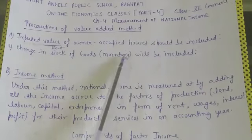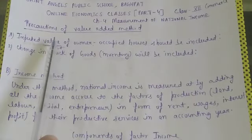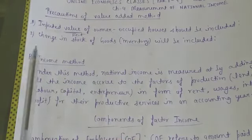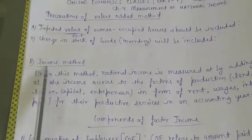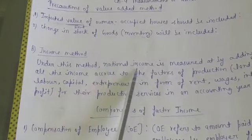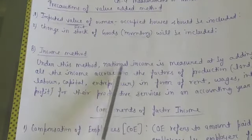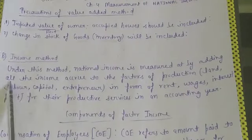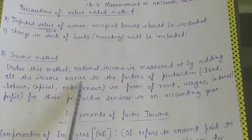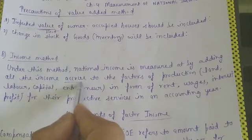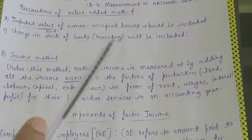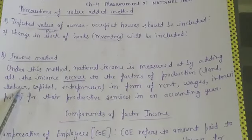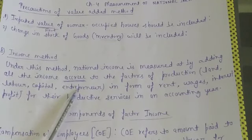After the value-added method, the next method is the income method. Under this method, national income is measured by adding all the income accrued — accrued means received — to the factors of production. There are four factors of production: land, labor, capital, and entrepreneur.